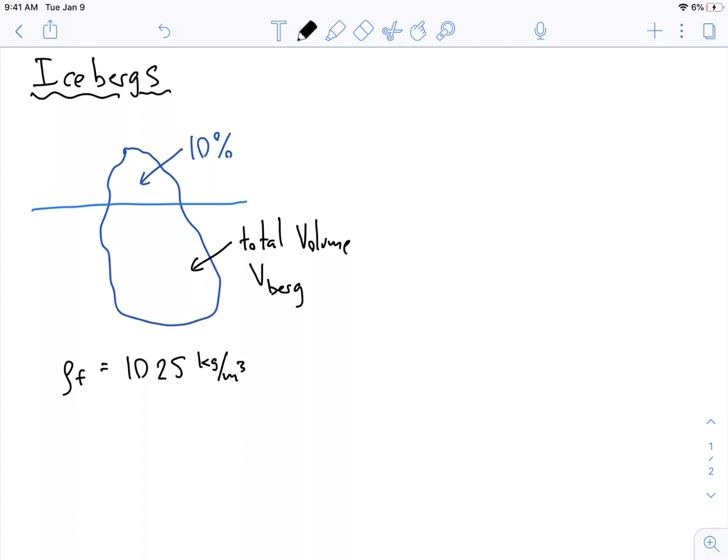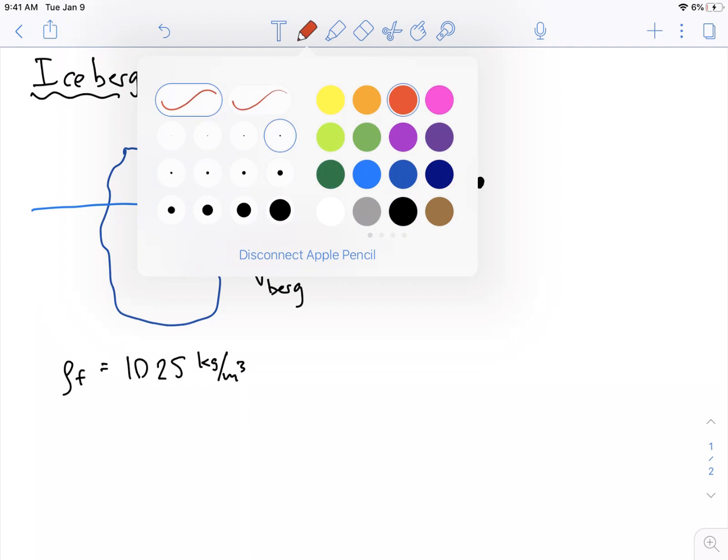So the first thing you want to do with any of these is draw a free body diagram, right? So this is really a balance of forces, that's why this iceberg is floating. So what does the balance of forces look like? Well, I'm going to draw my iceberg as a point-like particle.